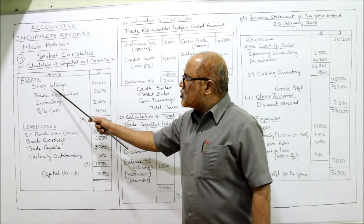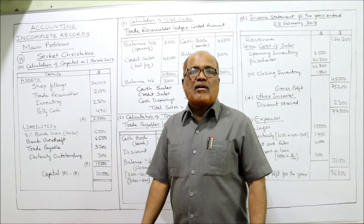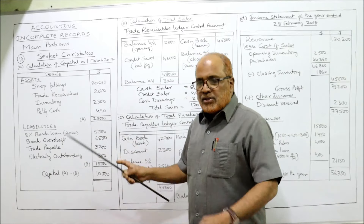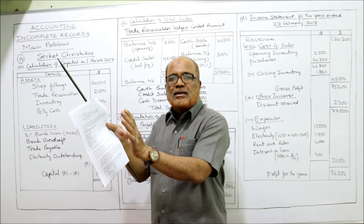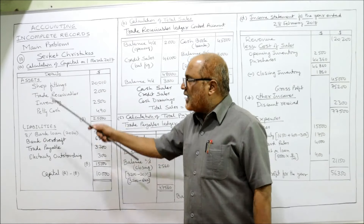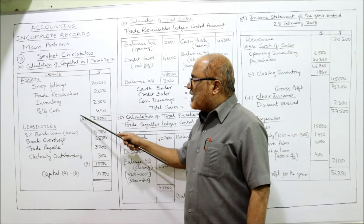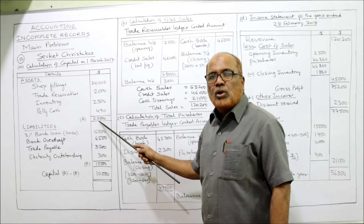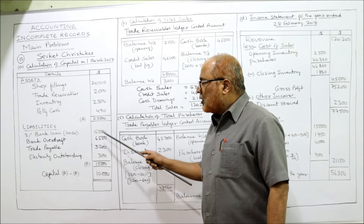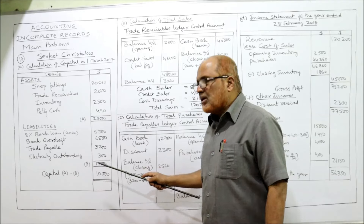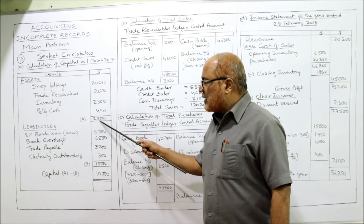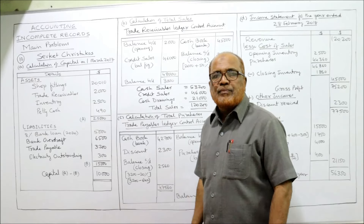Shop fittings is a non-current asset, so $20,000 goes to the asset side. Inventory is the stock of unsold goods — it's an asset. Total assets = $25,000 (denoted A). Total liabilities = $15,000 (denoted B). Capital = Assets minus Liabilities = $25,000 minus $15,000 = $10,000. Part A is now complete.